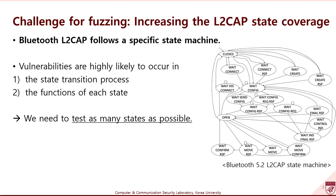In order to effectively detect critical L2CAP vulnerabilities, first, we need to increase the L2CAP state coverage. Vulnerabilities are highly likely to occur in the state transition process and the functions of each state. We should enter various states and test the functions used for each state. To do that, we need to test as many states as possible. Additionally, Bluetooth devices usually reject packets which are not related to the current state, so we need to consider suitable packets for each state.